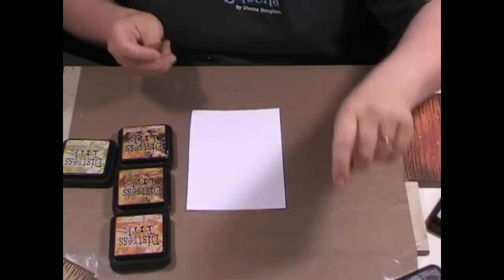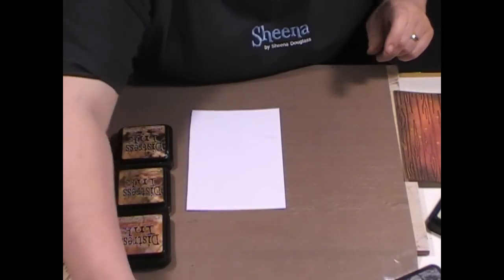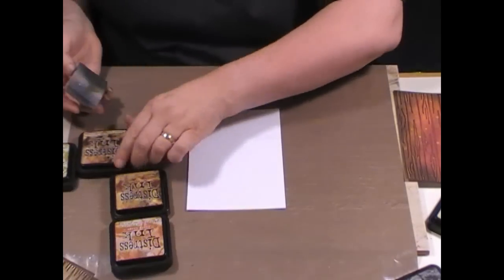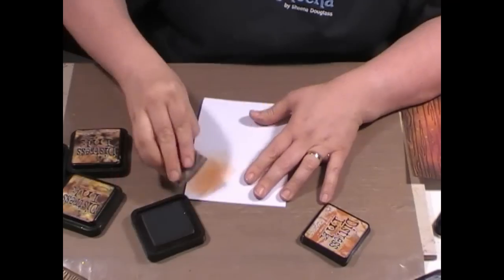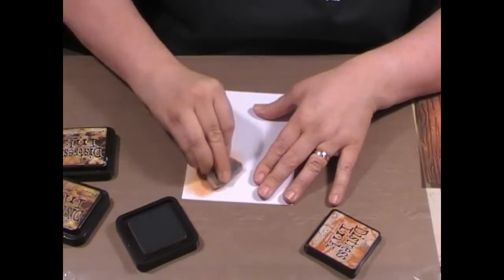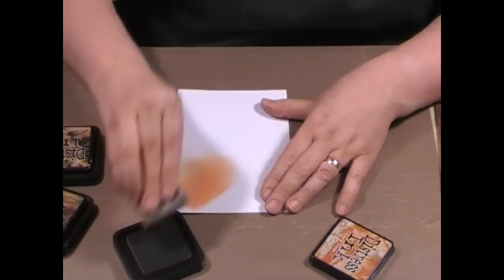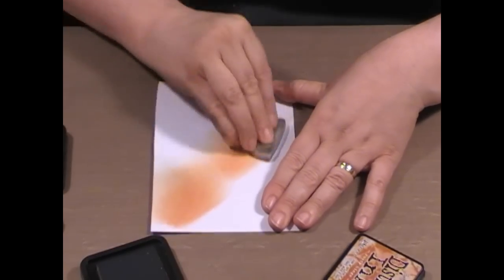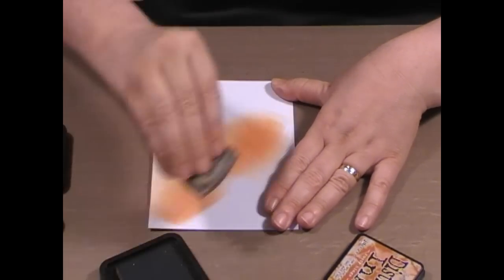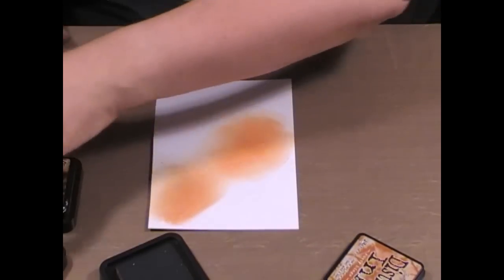This is the technique you might have seen me do before. We're literally just going to splodge color onto the card like this, big bold splodges of color all over. I'm using rusty hinge because I think that's a nice warm kind of woody color.